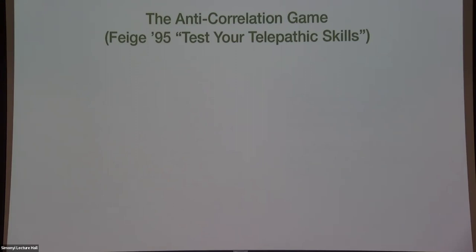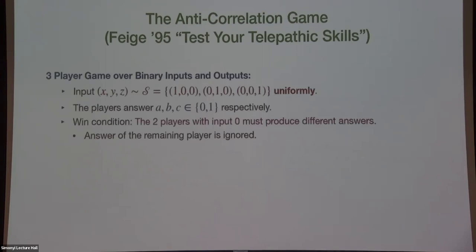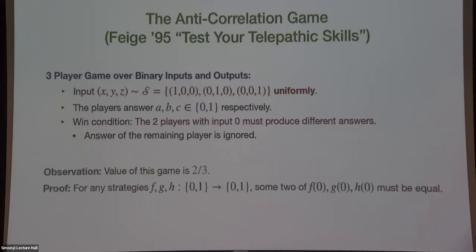I'll give an example called the anti-correlation game, introduced by Feige in 1995. The game is a three-player game where inputs and outputs are binary. The verifier samples X, Y, and Z from the set of all weight-one vectors — that is {(1,0,0), (0,1,0), (0,0,1)} — so with probability one-third, exactly one of X, Y, or Z is one and the others are zero. Players are given X, Y, Z respectively, and give back answers A, B, C. The win condition is that the two players who get input zero must produce different answers.